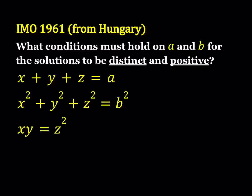Hello everyone. In this video, we're going to be solving an IMO problem from 1961. This problem was proposed by Hungary and it says: what conditions must hold on A and B for the solutions to this system to be distinct and positive? Quick info about IMO — it is the International Math Olympiads which started in 1959.